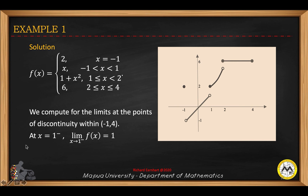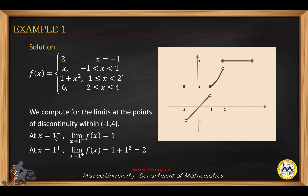Starting with x equals 1 from the left: the function to the left of 1 is f of x equals x. So the limit of f of x as x approaches 1 from the left equals 1. At x equals 1 from the right, we take the limit using the parabola. Substituting x equals 1 into 1 plus x squared gives 1 plus 1, which is 2. So the limit of f of x as x approaches 1 from the right is 2.